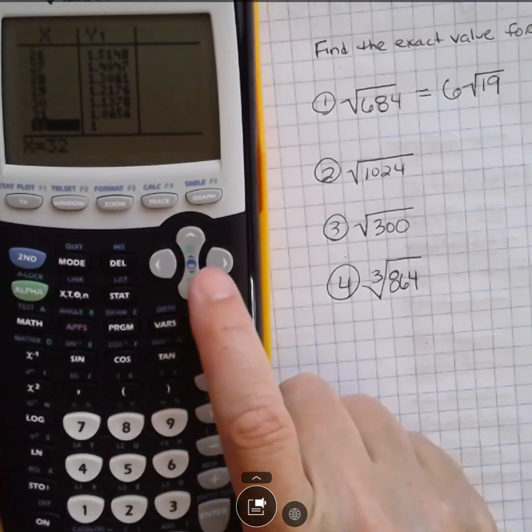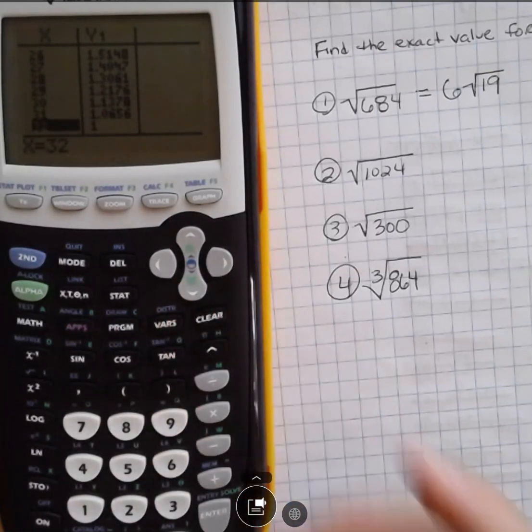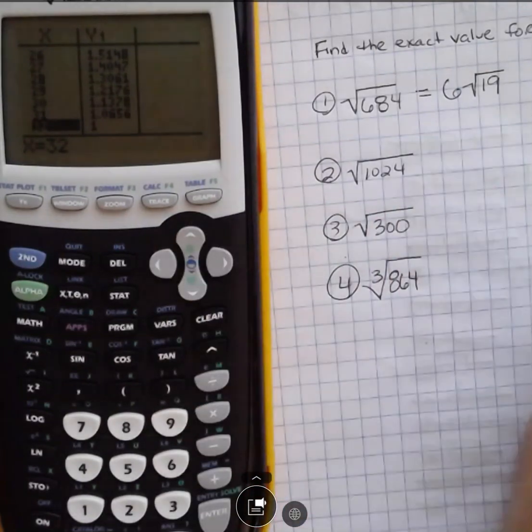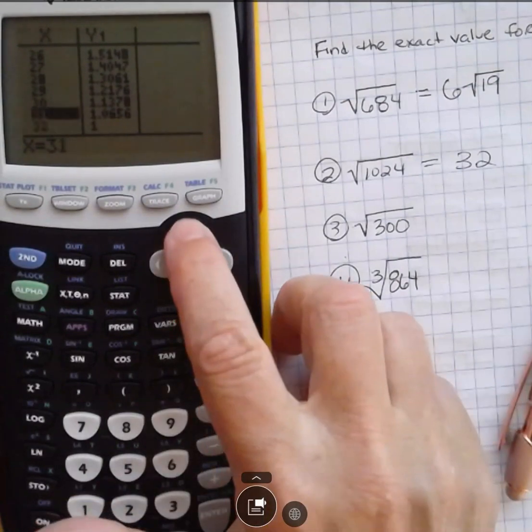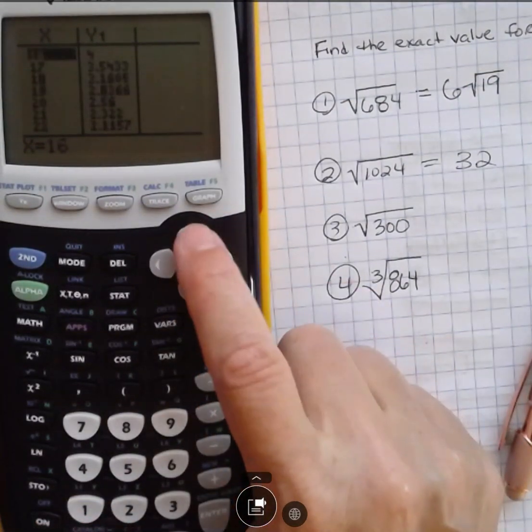And if you keep going and keep going and keep going, then eventually you're going to get down there to square root of 32. 32 with the square root of 1, and that just means that our answer is exactly 32. So you can use this, but if you can get away from it and not have to use it, that would be good.